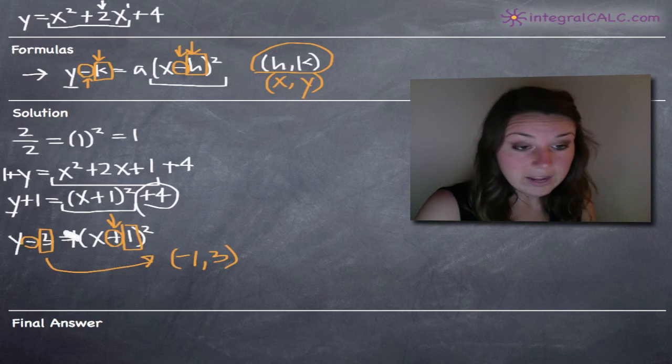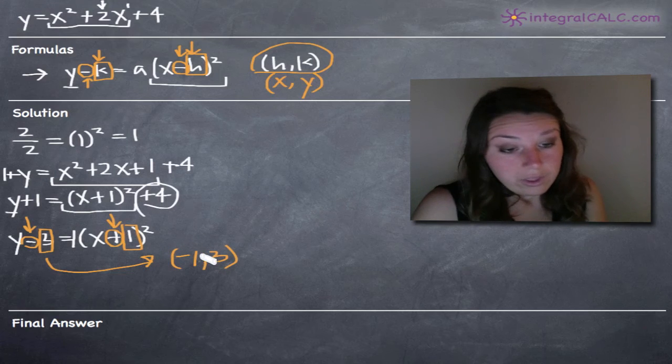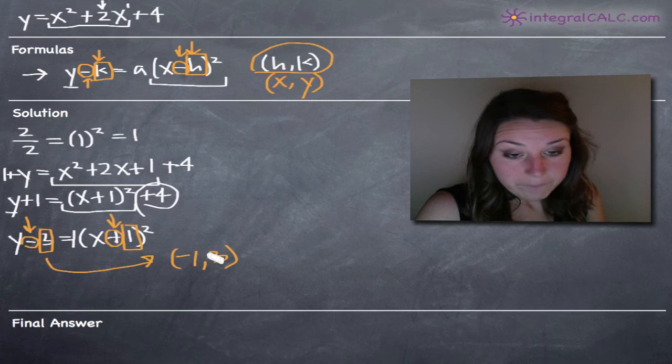If you have a positive sign like this, you've got to make your coordinate negative. If you have a negative sign, you can just take the number itself without the negative sign. So that's how we get negative one comma three for our vertex.